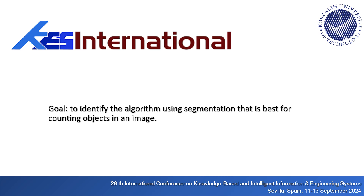The solution counts the number of objects in the image and can be used in production lines for product inspection, people overcrowding detection in a public place, and also in visual recognition systems or robotics. The aim of the work is to select algorithms for counting objects in images and then to verify the correctness and accuracy of the obtained results.